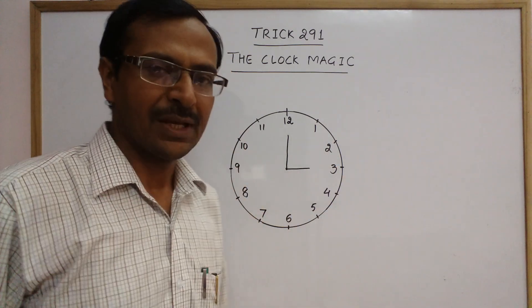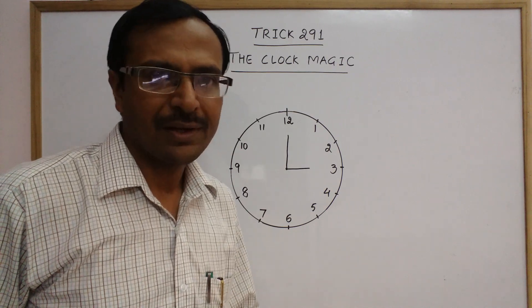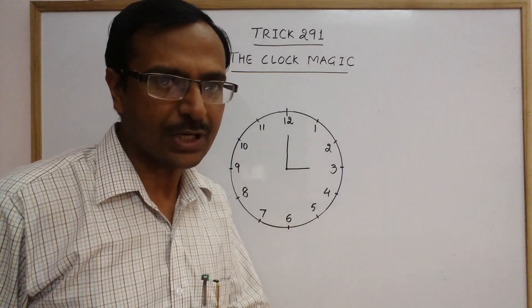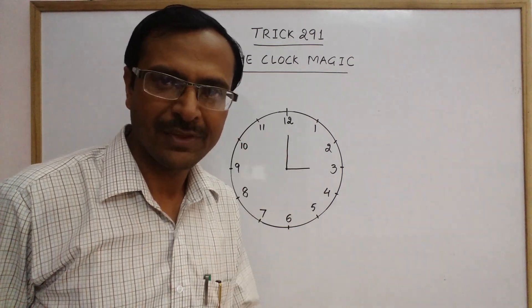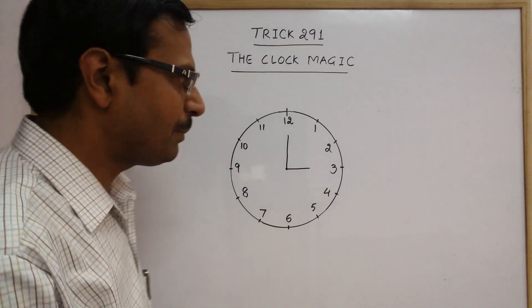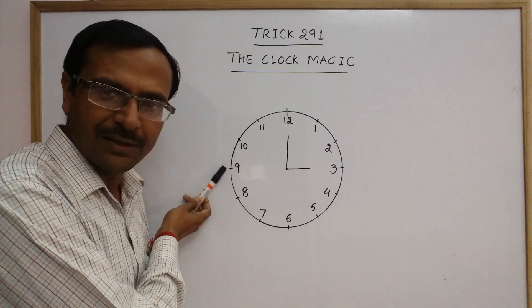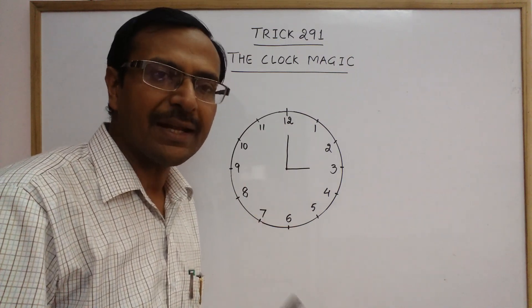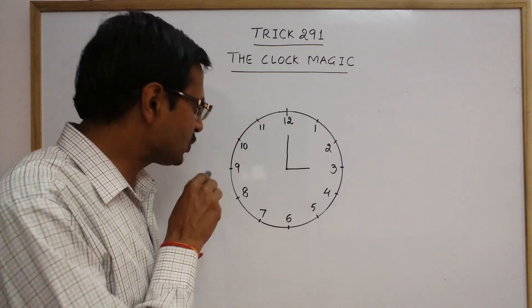Then ask one of your friends to choose one of the numbers from one to twelve. This is the first step: tell your friend to choose any one number in mind, not to tell you obviously, one to twelve, any number and keep it in the mind. Now in the meanwhile, what you do is keep the pen on a particular number, say I kept it on nine, and ask your friend to keep on adding one to the number which he has thought in his mind.